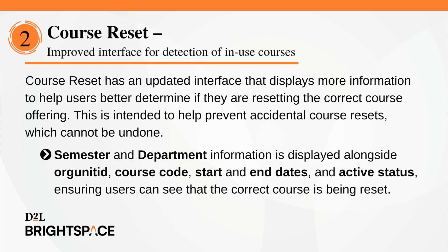Course Reset has an updated interface that displays more information to help users better determine if they are resetting the correct course offering. This is intended to help prevent accidental course resets, which cannot be undone. Semester and department information is displayed alongside org unit ID, course code, start and end dates, and active status, ensuring users can see that the correct course is being reset.